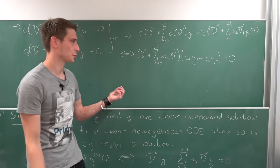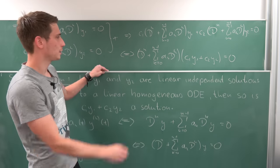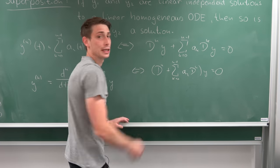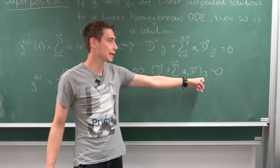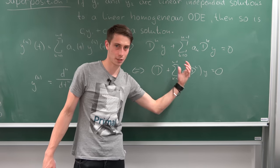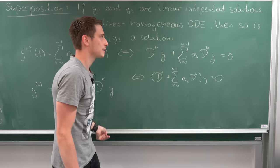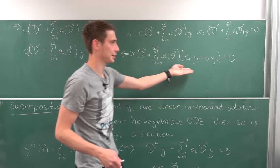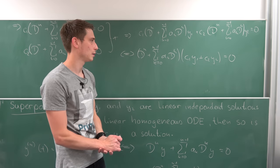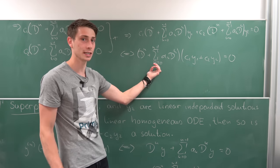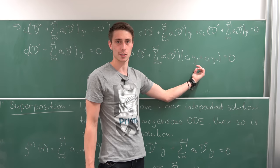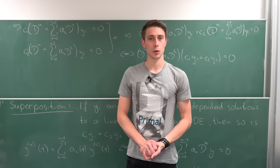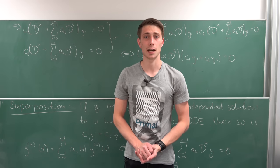And that's exactly what we wanted to show. So we have brought those two equations into this form right here. So if y1 and y2 are solutions to this linear homogeneous ODE, then also this term right here, which is exactly this term right here, is also a solution to this problem because we have this differential operator times this solution and this is equal to 0. So that's what we wanted to show. QED I would say.